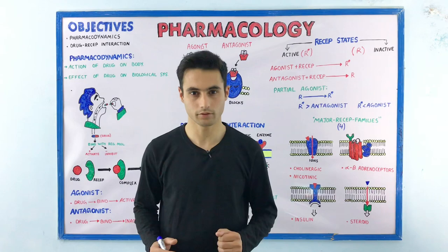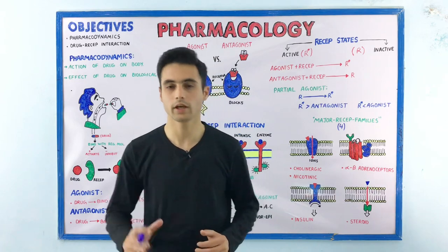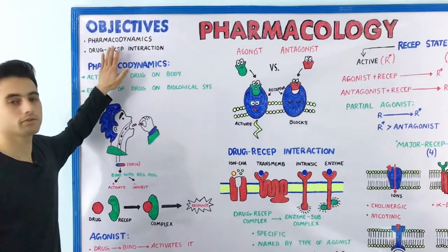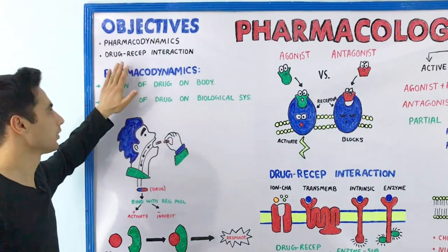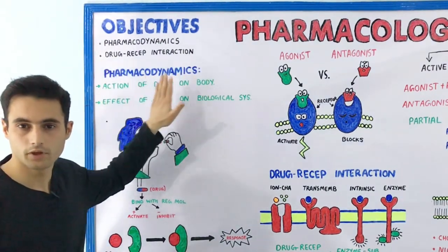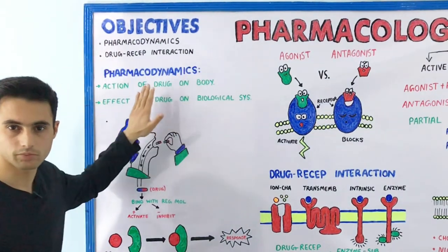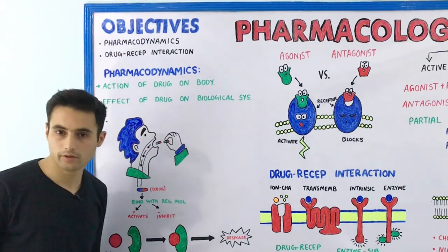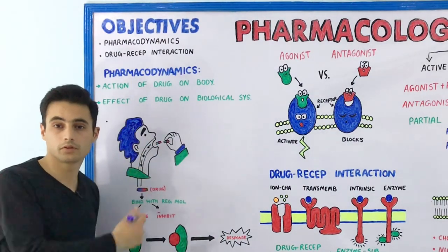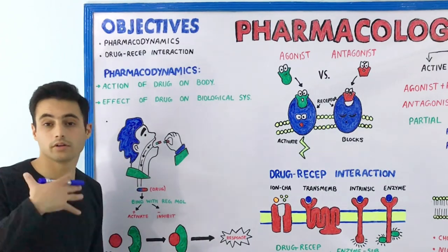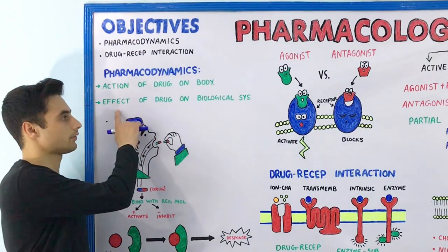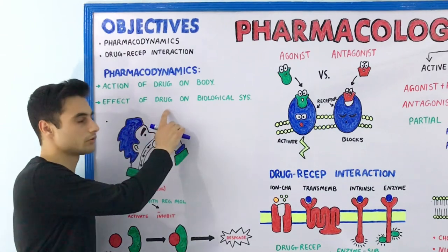Hey everyone, this is Dr. Kazi, and in this video we are going to learn about what is pharmacodynamics and what is drug-receptor interaction. Pharmacodynamics, in very simple and easy words, is defined as the action of the drug on the body or the living system. It can also be defined as the effect of the drug on the biological system or the living system.